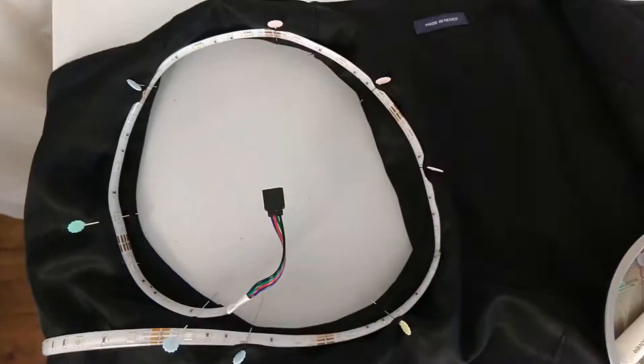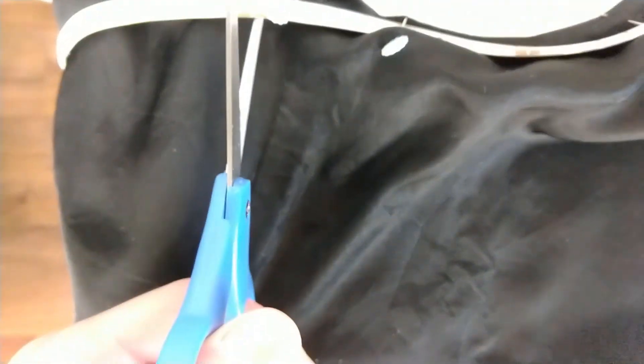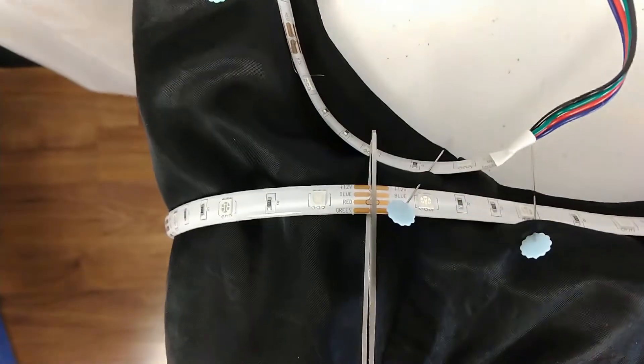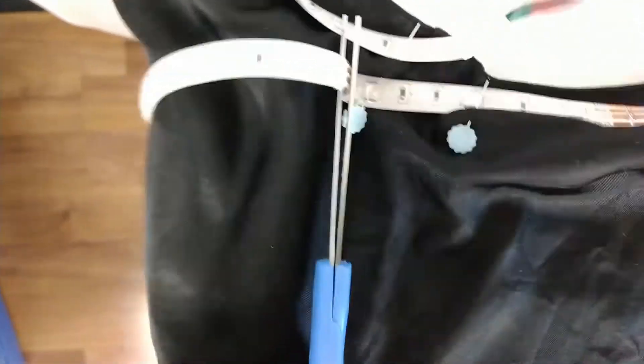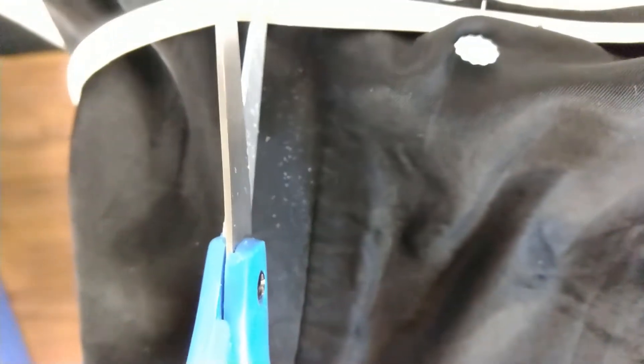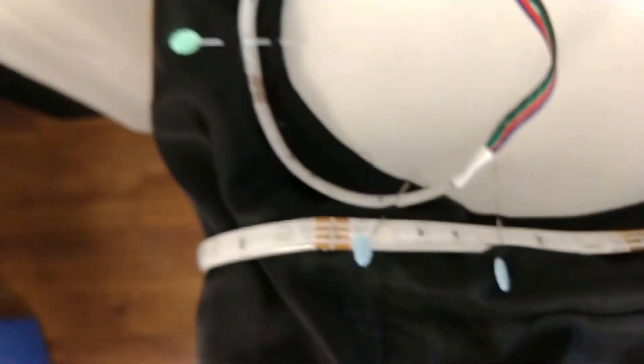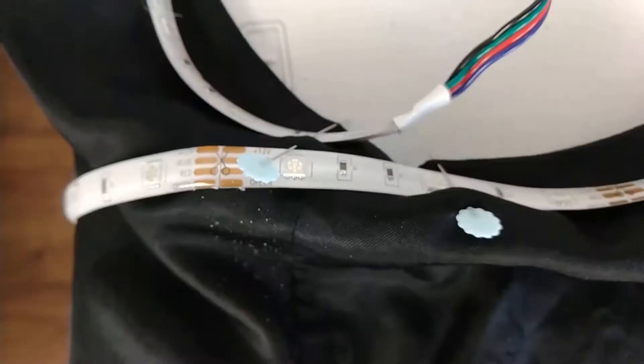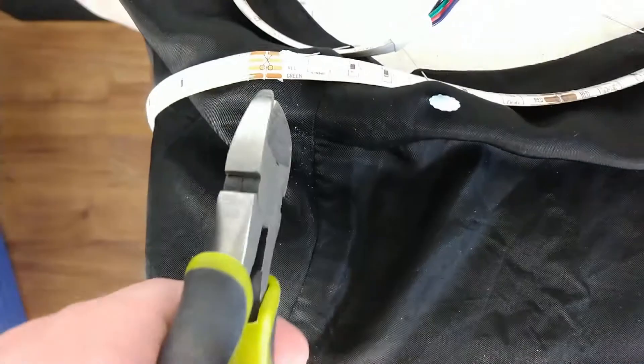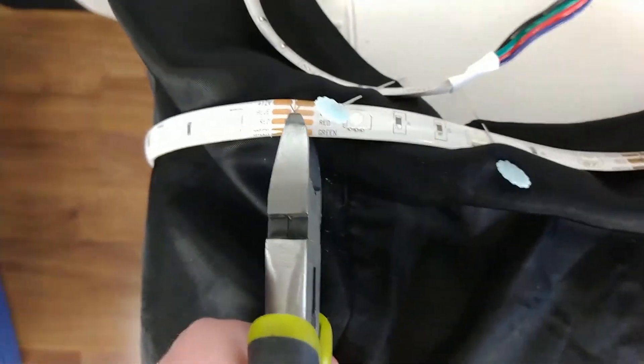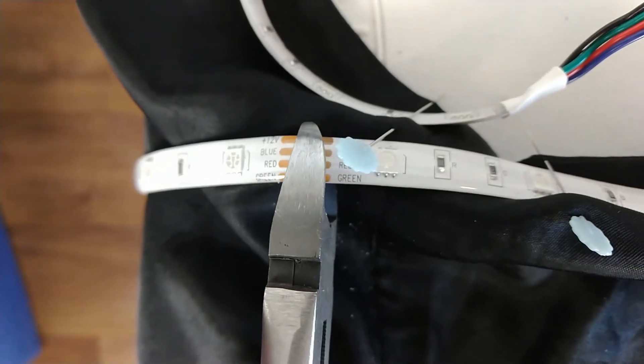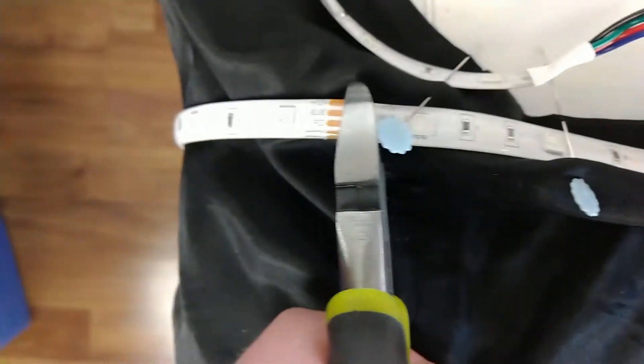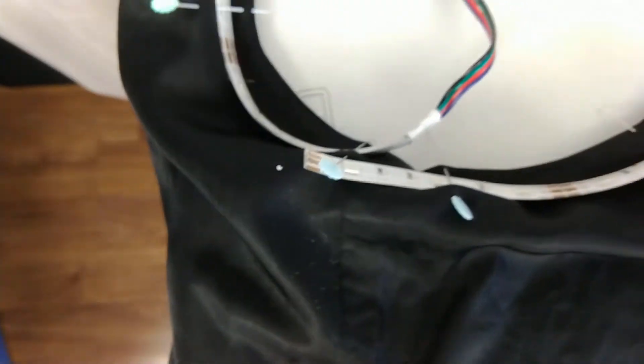Now that everything is lined up, let's cut it. Make sure I line it up, and, oop. Let's try that again. Oh well, that didn't work. Clearly scissors are the wrong tool to be cutting the LED strips with. Let's try these. There we go. Much better.